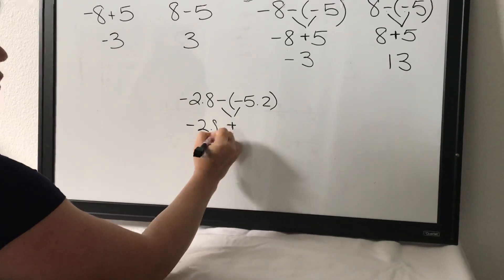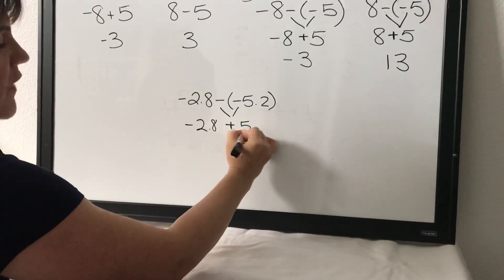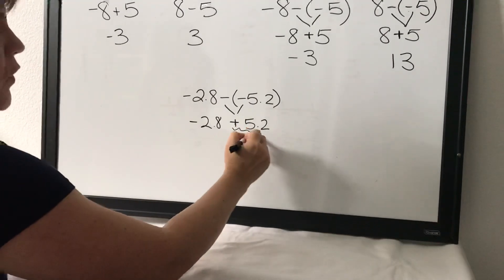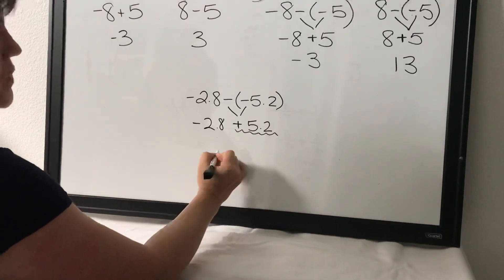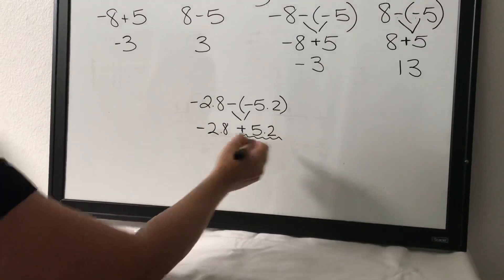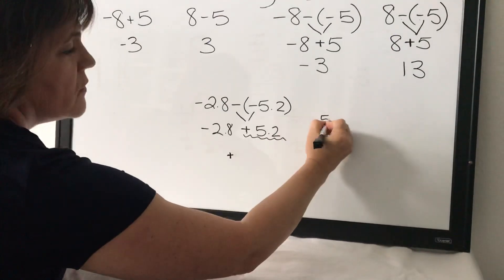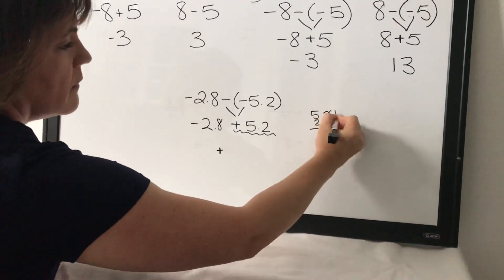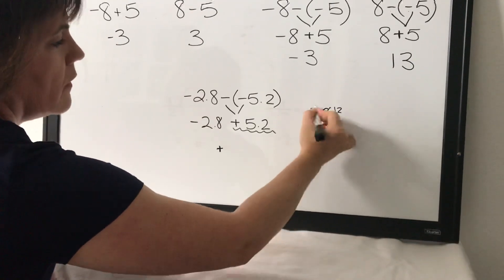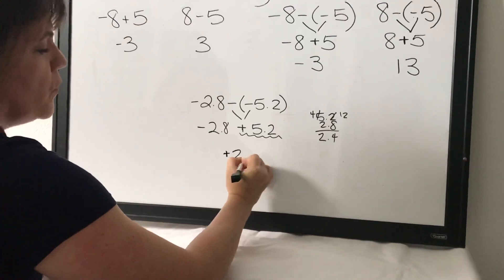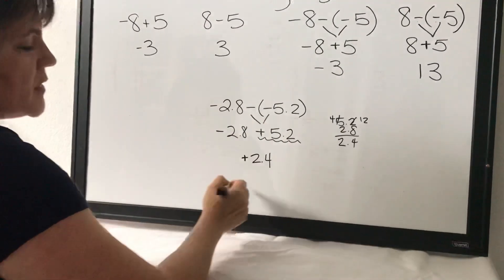Negative 2.8 plus 5.2. Well now you know you have more positives. So your answer is going to be positive. How many more positives? Well just do a little quick subtraction. 2.4 more positives.